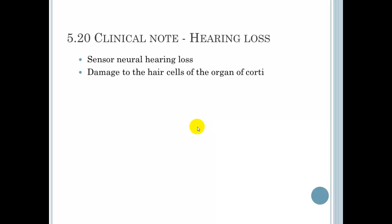Clinical note, hearing loss. Sensorineural hearing loss, this comes from loud noises, and this is caused from damage to the hair cells of the organ of Corti. So if you've been around guns or loud noises, machinery without hearing protection, sirens, all of these can cause hearing loss from overstimulation and damage to those hair cells.